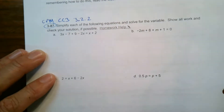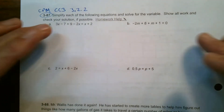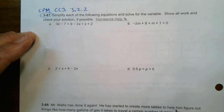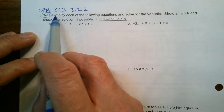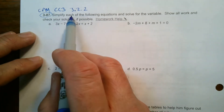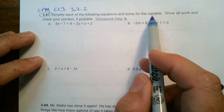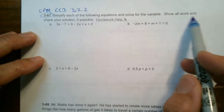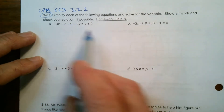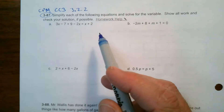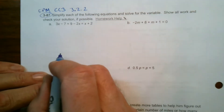Number 387. I've got four equations to solve and the directions say simplify each of the following equations and solve for the variable. Show all work and check your solutions if possible. So we'll go over that idea as well — how do you check your solution?